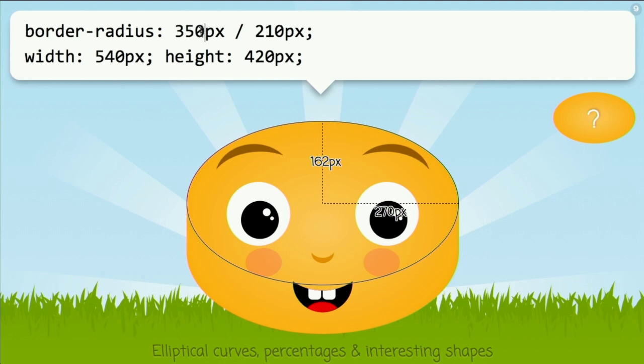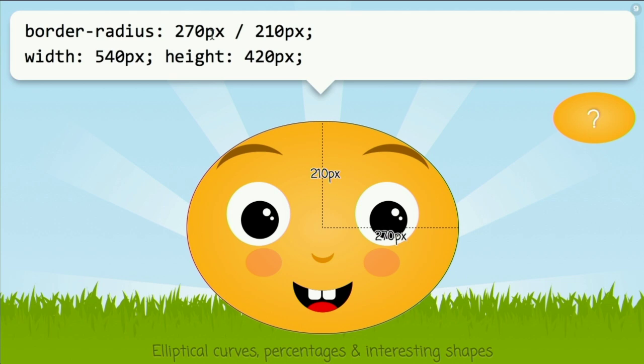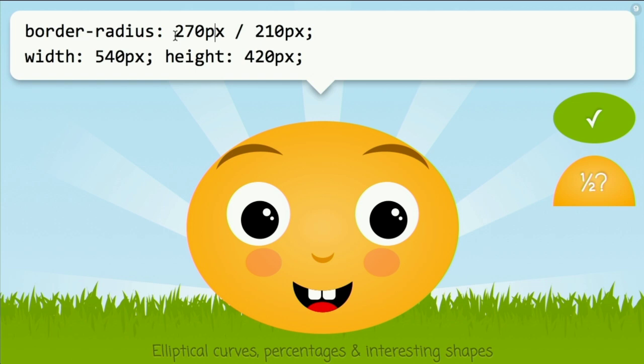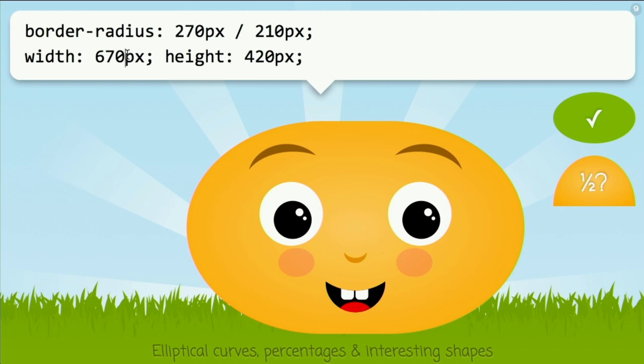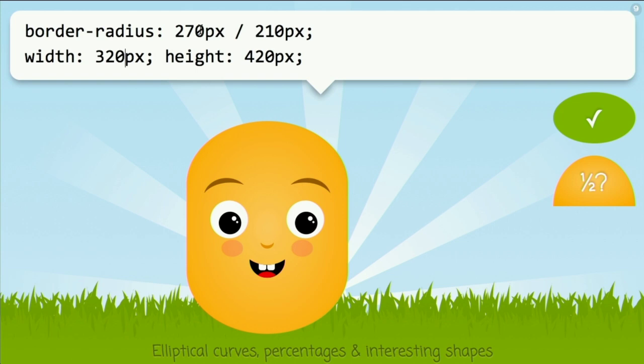If we make this value bigger, you can see how it works. And if it's exactly the same as half of our width, and the vertical one is half of our height, we have an ellipse. The problem with this ellipse is that it's not very flexible — if we increase the width, you can see that it's not an ellipse anymore; it's a weird sort of cylindrical shape. Of course, we can change the value to reflect the new width and it's an ellipse again, but it's not very portable.